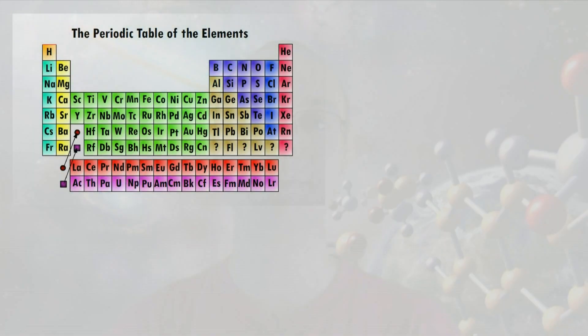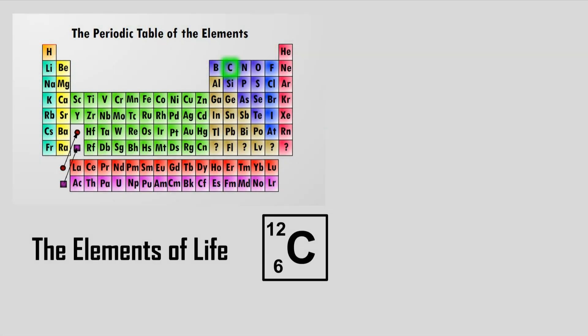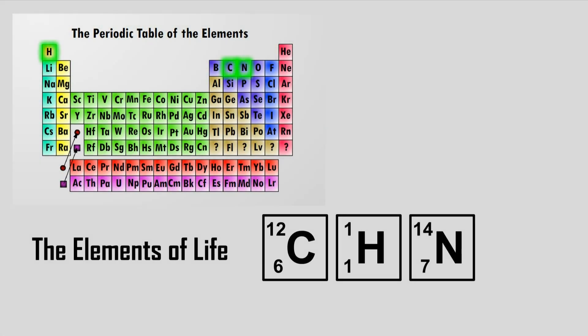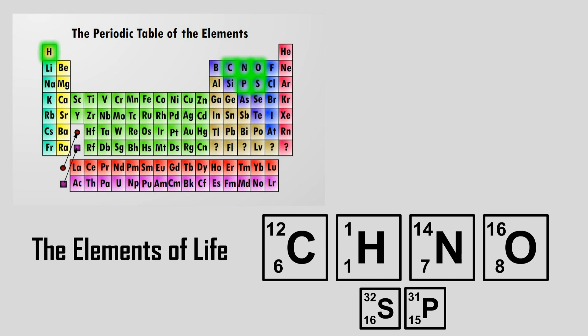Living systems on Earth are primarily composed of six of the chemical elements. Carbon, hydrogen, nitrogen, and oxygen being the most abundant, with smaller amounts of sulfur and phosphorus in addition to trace elements.